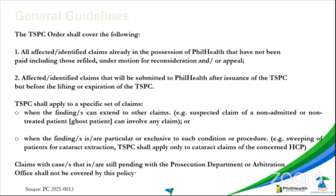But for the second bullet, if the regional office found it's only for a particular case — for example, a hospital with a dialysis service where a pattern was found only in dialysis claims, with many ghost dialysis claims — then they can impose TSPC only on the dialysis claims. So the whole hospital claims are not affected, only the dialysis claims. That is the intent of the two provisions.